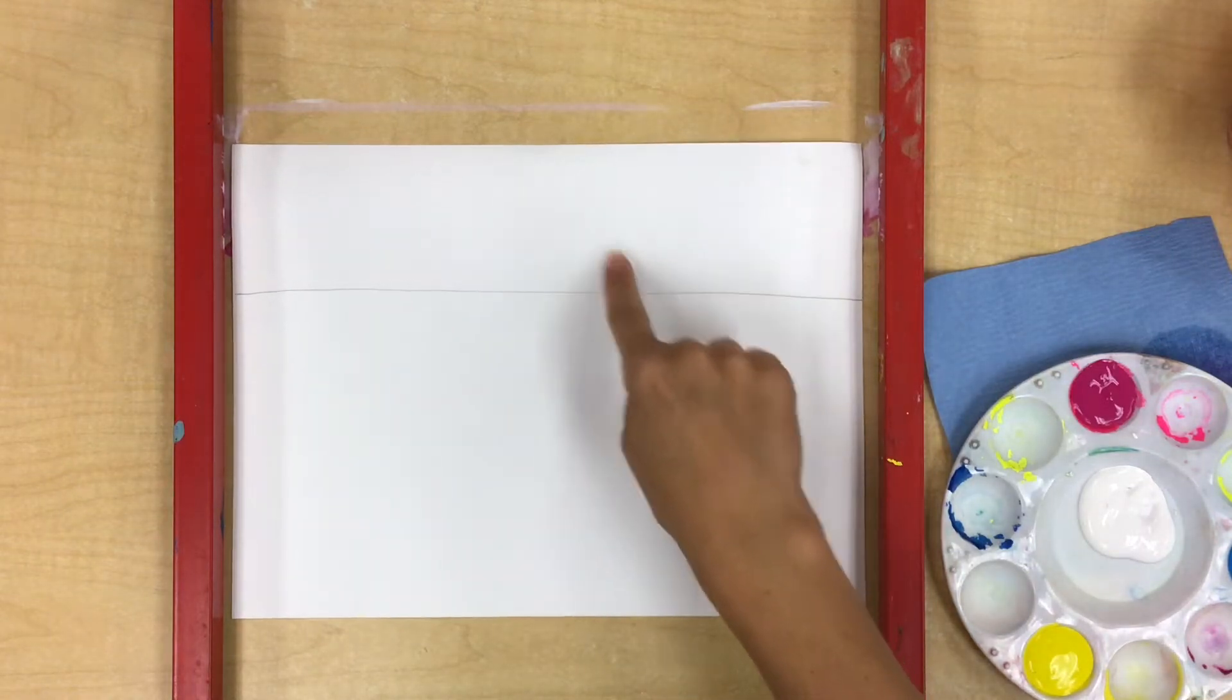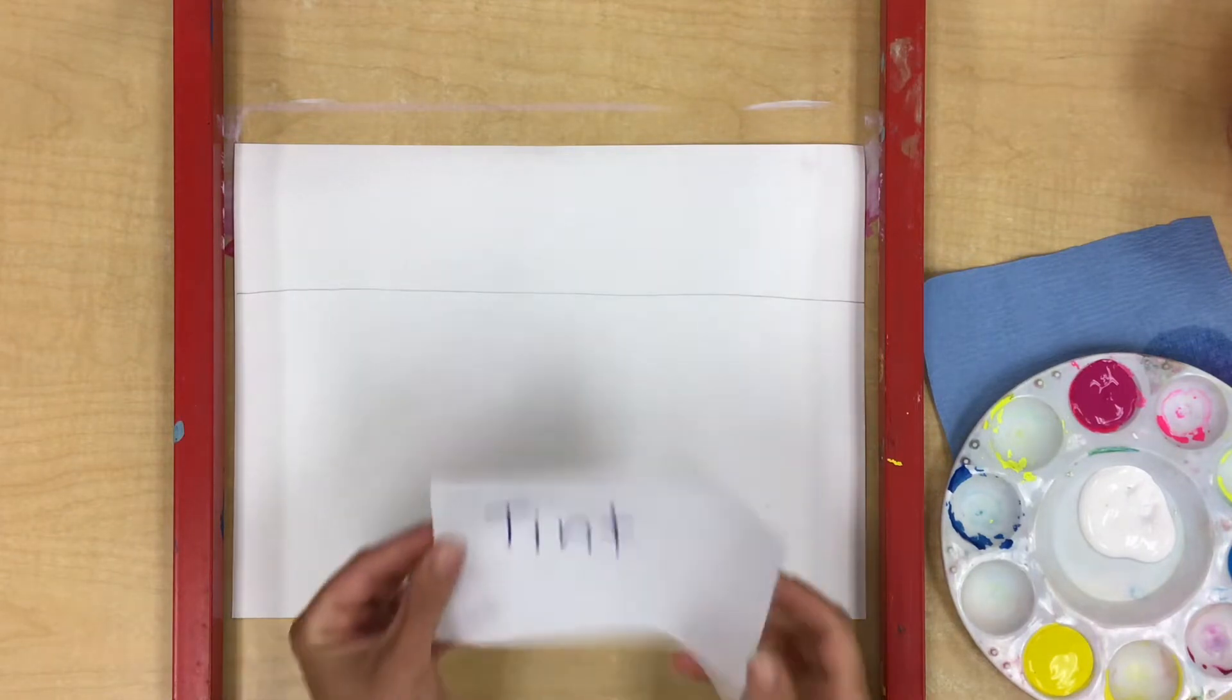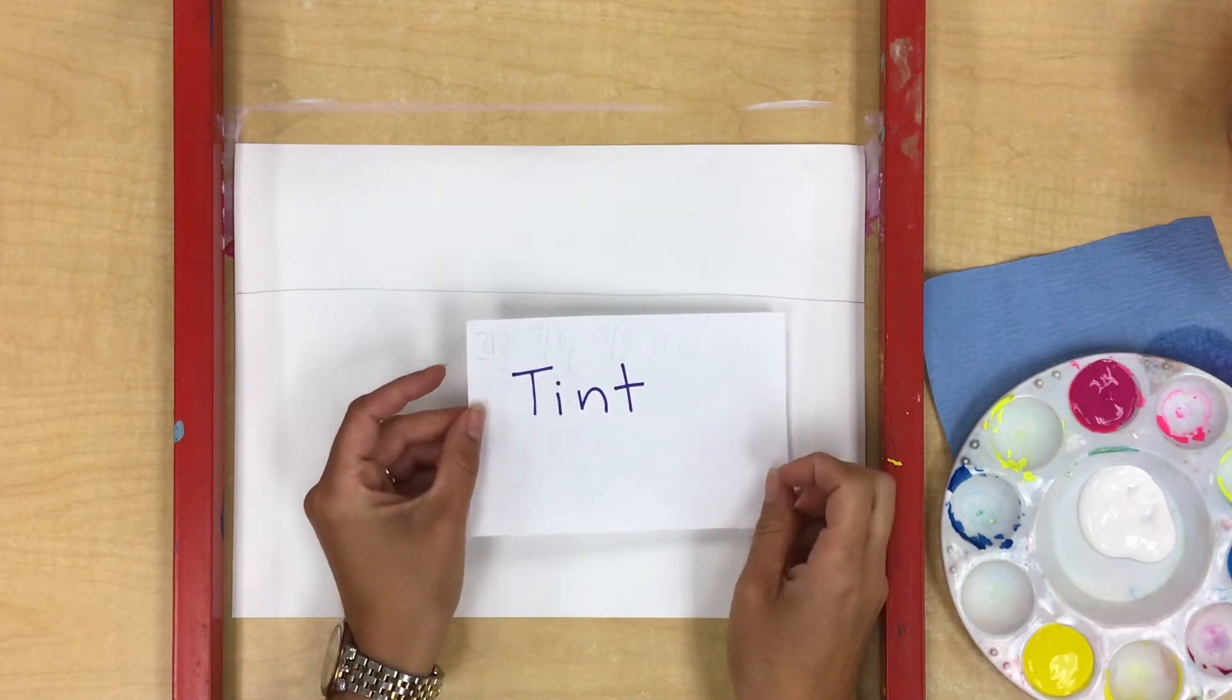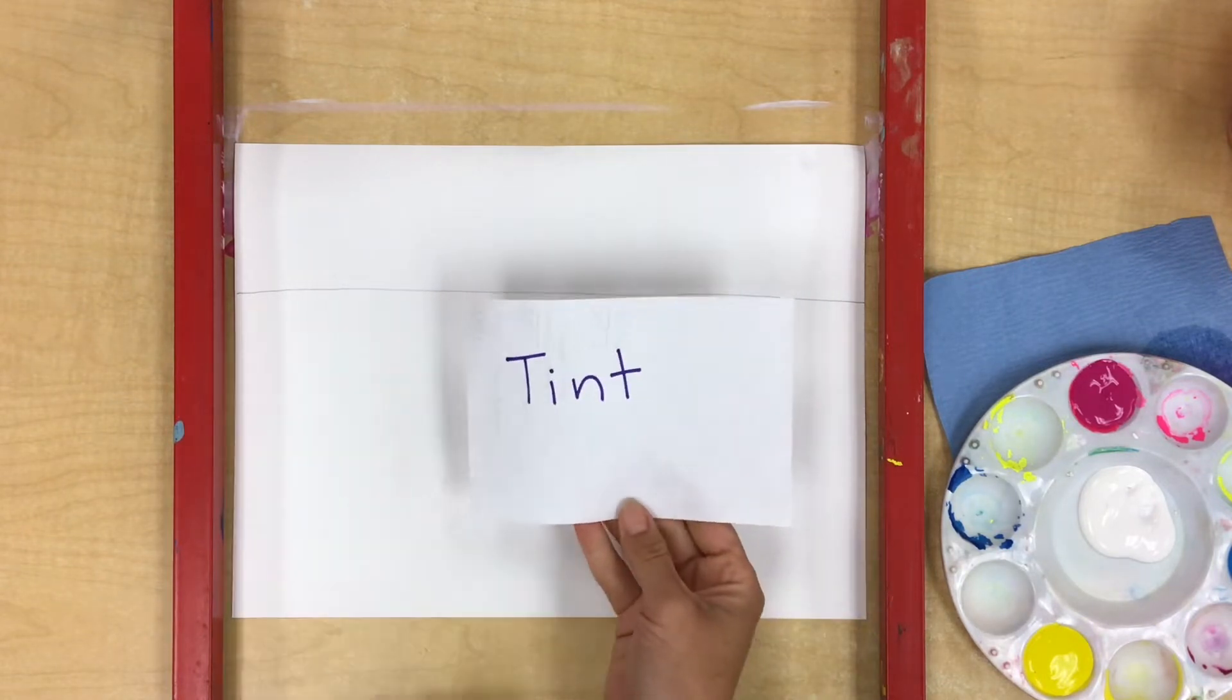Today we're going to paint the sky of our alligator seascape project. For this step we're going to be focusing on the art vocabulary word tints. Tint is where you add white to a color to make it lighter.